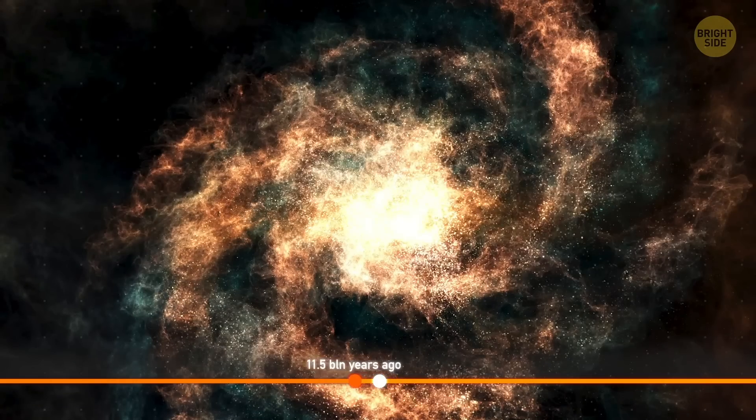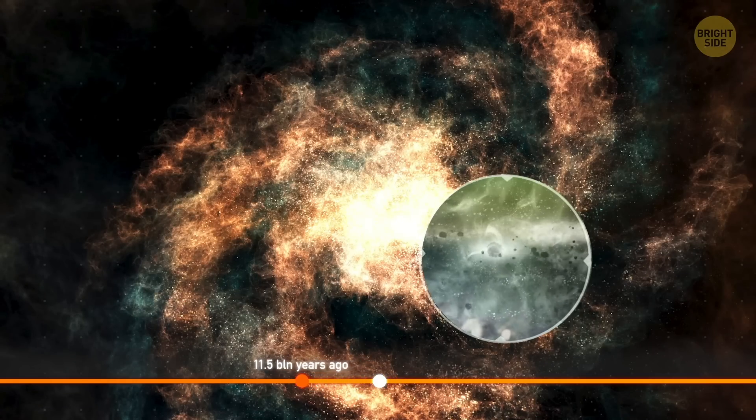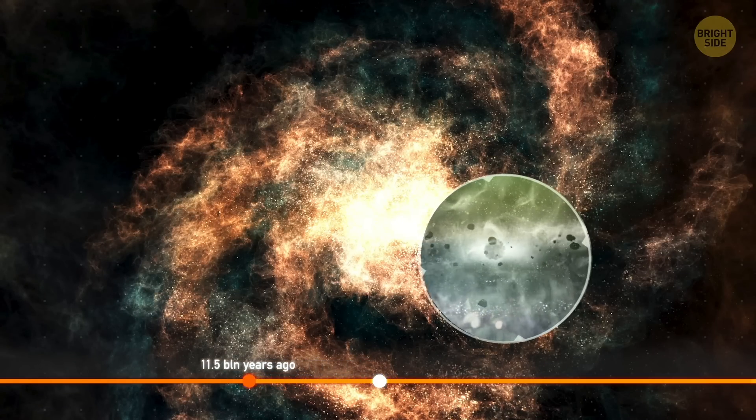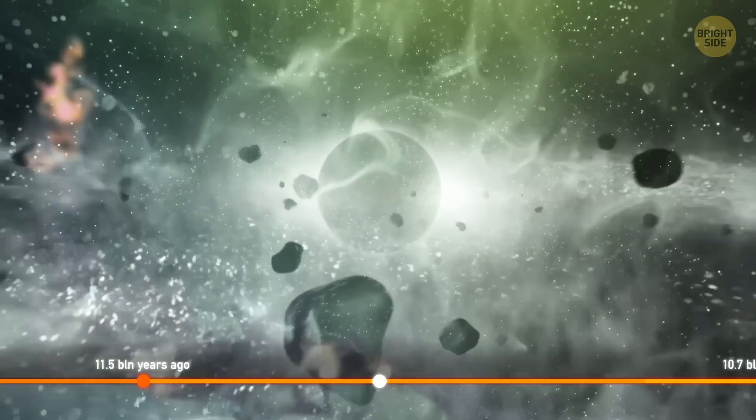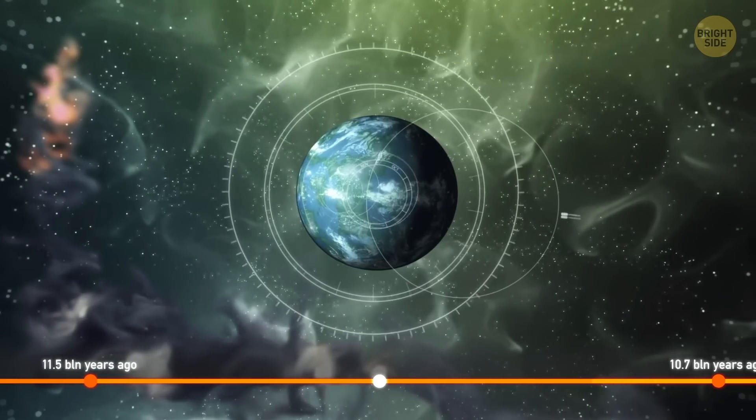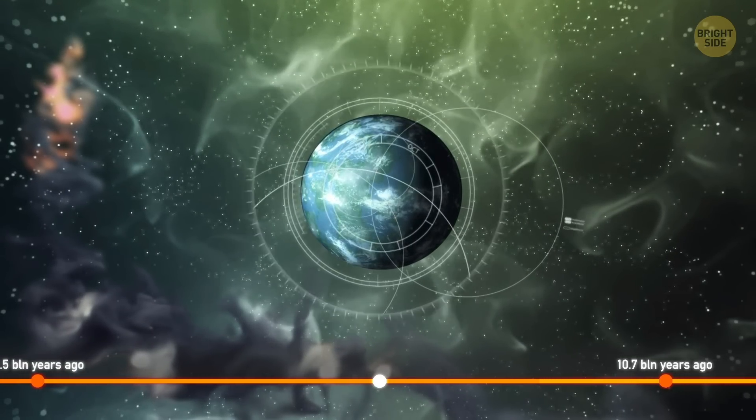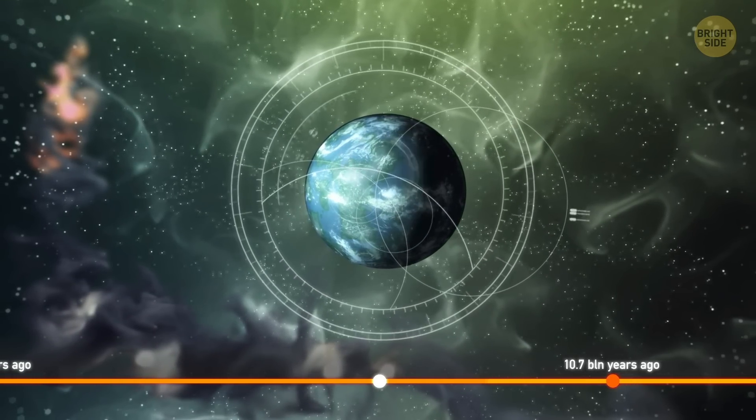About 11.5 billion years ago, a peculiar planet popped up. Captain B is the oldest known exoplanet, uncannily similar to Earth in everything. Nobody knows if it's inhabited, but it sure can be. It had more than enough time to develop life.